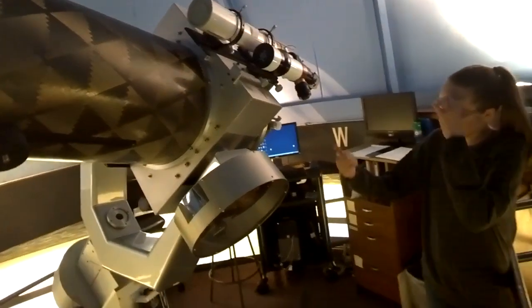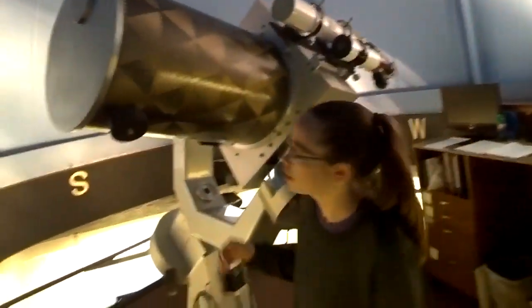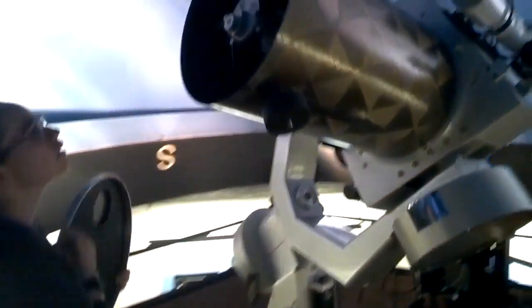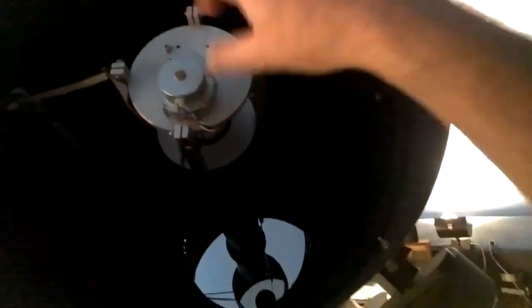So this is the Schmidt-Cassegrain telescope, which means it's got the primary and the secondary and then the hole in the primary. Okay, cool. So I can actually see the mirror down there and I can see that there's a hole in it. I can just barely see that. And then there's a secondary mirror up here, which is bouncing that light back down. So this is the same sort of mirror telescope that we have out on the deck.